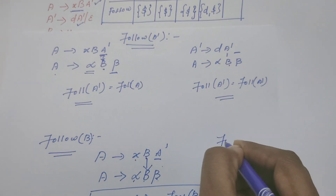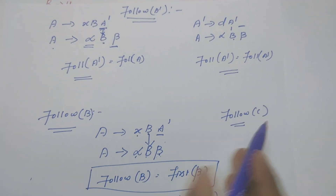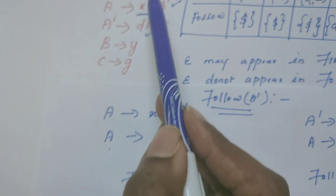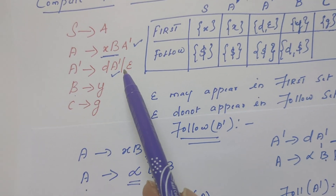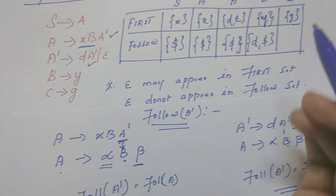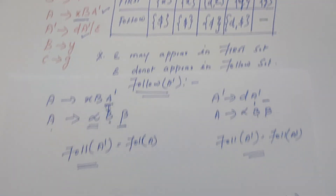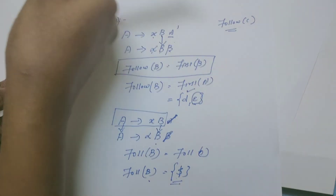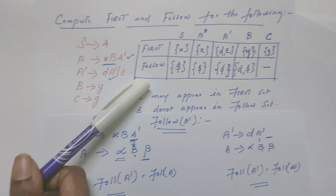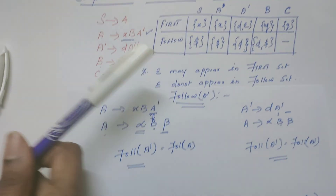Last computation: we have to identify follow of C. To compute follow of C, we select the rule which has C on the right-hand side. There is no rule which contains C on the right-hand side, so we cannot identify follow of C. This is how we compute first and follow. I hope you understood this problem. Please take a paper and pen and try solving this problem. I will meet you in another video with another example. Thank you.